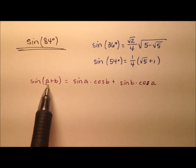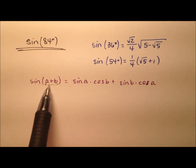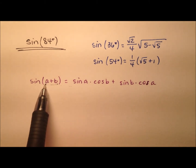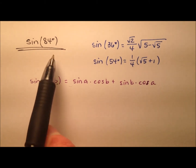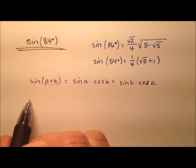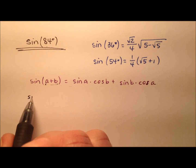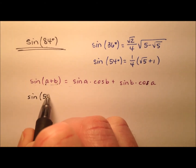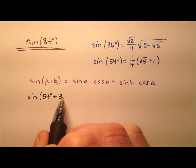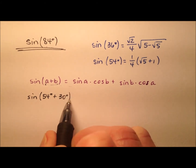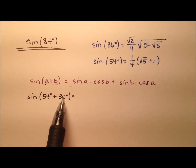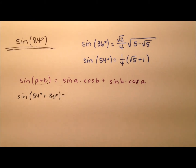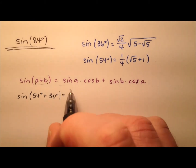So with this a plus b inside, we need two angles that are nice to work with that add up to 84 degrees. Let's use the sine of 54 degrees plus 30 degrees. And 54 plus 30 do add up to 84 degrees, so we can go ahead and use this expansion.